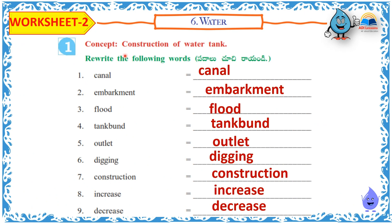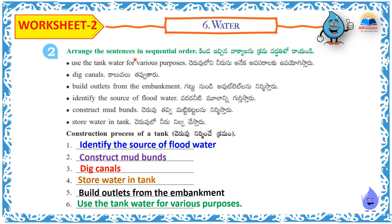Worksheet 2 Concept: Construction of Water Tank. Rewrite the following words: Canal, Embankment, Flood, Tank, Bund, Outlet, Digging, Construction, Increase, Decrease. Arrange the sentences in sequential order: Identify the source of flood water. Construct Mud Bunds. Dig Canals. Store Water in Tank. Build Water Outlets from Embankment. Use the Tank Water for Various Purposes.